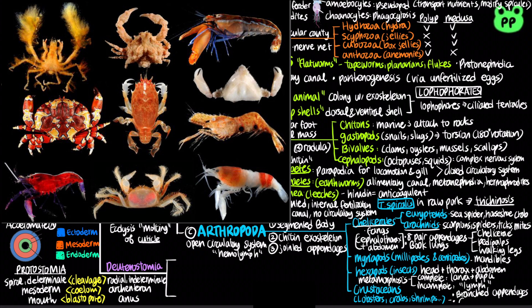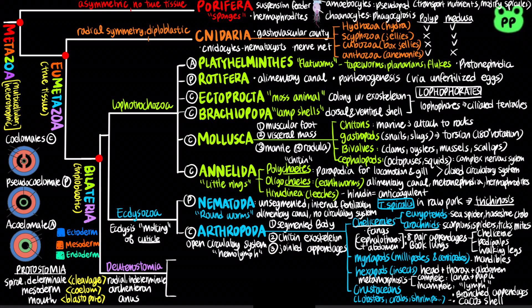Many crustaceans also have a shell made of calcium carbonate. Bilateria also contains the clade Deuterostomia. Most lophotrochozoans and ecdysozoans are protostomes, whereas all deuterostomia are deuterostomes and coelomates.